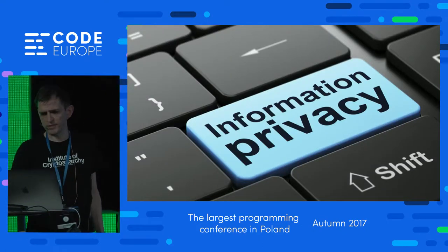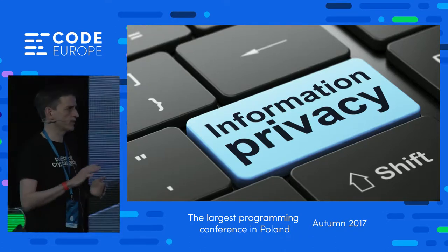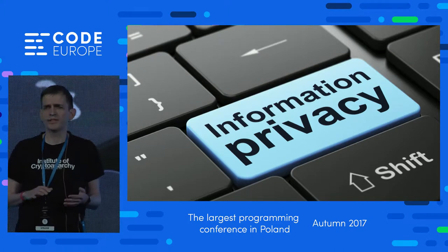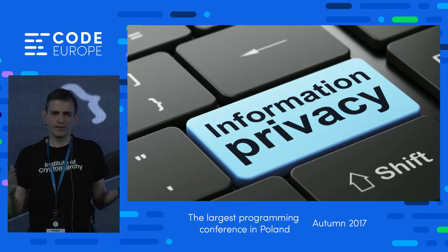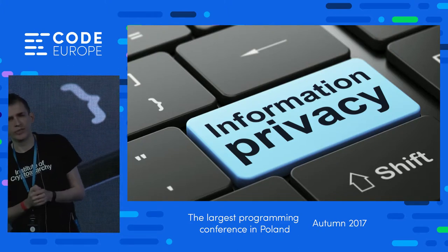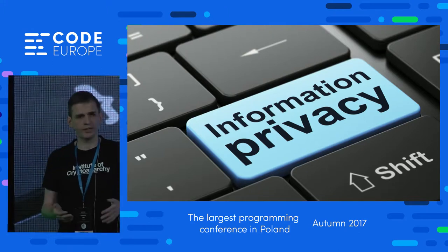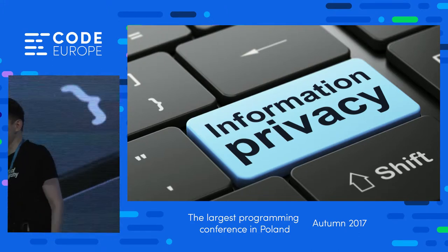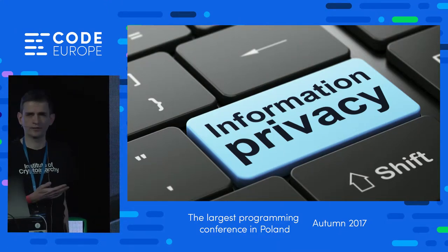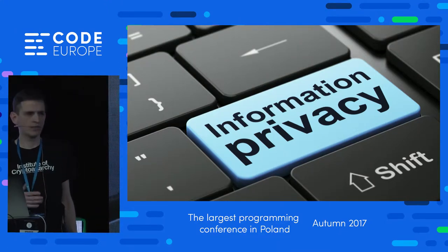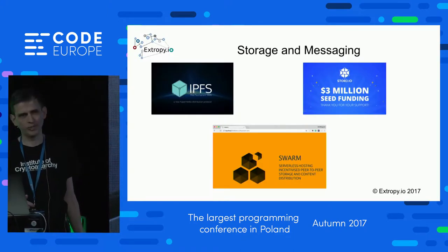Another problem is around privacy. Every transaction on the blockchain is seen by everybody, so if you have private data, it's harder to implement. The way around this is to encrypt data before you put it on the blockchain. This is a particular problem in Europe — we're seeing GDPR regulations coming in, making it quite hard to write applications that comply.